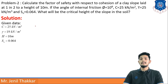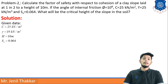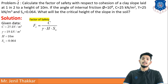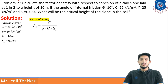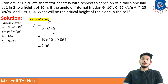Given data: c = 25 kN/m², γ = 19 kN/m³, H = 10 meters, stability number SN = 0.064. Using the formula for factor of safety with respect to cohesion: FC = c / (γ × H × SN). Substituting: FC = 25 / (19 × 10 × 0.064) = 2.06. Note that factor of safety is unitless, so no units are written.